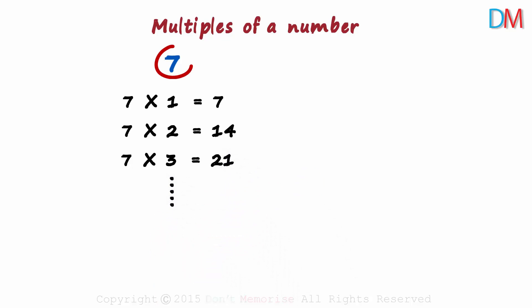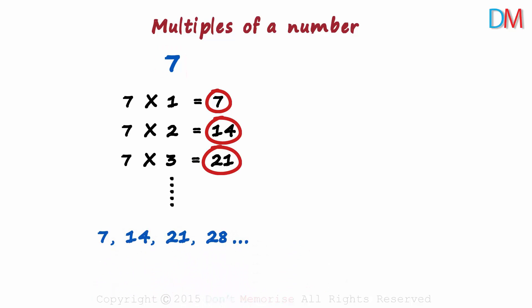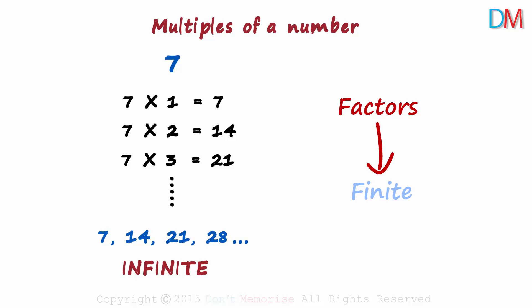The multiples of 7 are 7, 14, 21, 28 and so on. This proves that the list of multiples of a number is infinite, whereas the number of factors of a number is always finite.